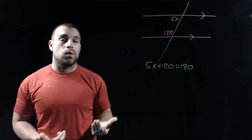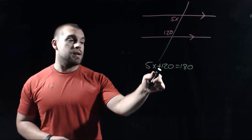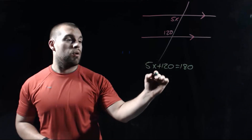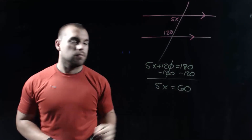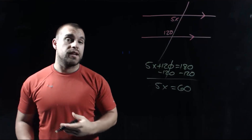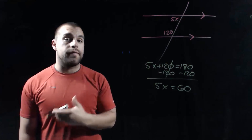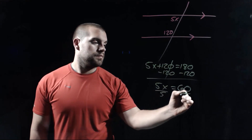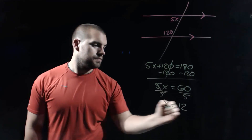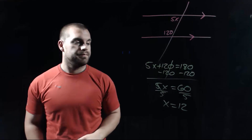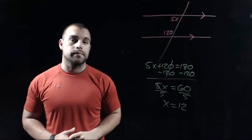Then again we're going to do some algebra solving. First thing I would look at is subtracting 120 over to the other side, so we end up with 5x equals 60. Then the last thing we need to do is get rid of that 5, so we'll divide both sides by 5, and we get x equals 12. That's going to be it for this video. Thanks for watching.